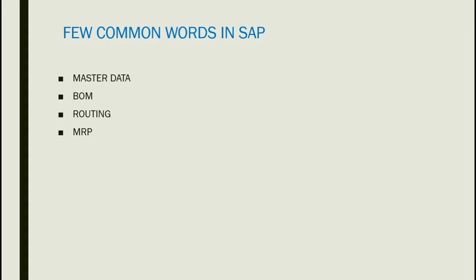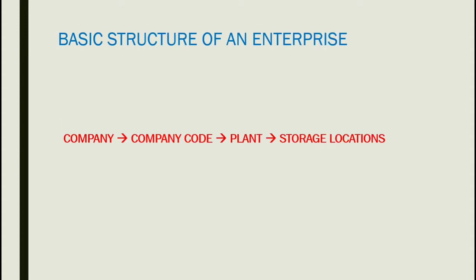Here are some common and very important words in SAP. Master data is a legal document which consists of all the data. BOM (Bill of Material) is also master data — it contains the material name, quantity, and unit of measure. Routing is a list of activities and operations. MRP (Material Requirement Planning) refers to the net requirement of material needed for production.